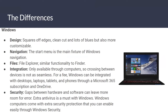Windows has square edges, looks very clean with a lot of blues, and is very customizable. The Start Menu is the main fixture of Windows navigation, and File Explorer is essentially the same as Finder. Integration is only available through computers, so crossing between devices is not as seamless. For a fee, Windows can integrate with desktops, laptops, tablets, and phones through Microsoft 365 and OneDrive. Security gaps between hardware and software can leave more room for error, so extra antivirus is a must with Windows.